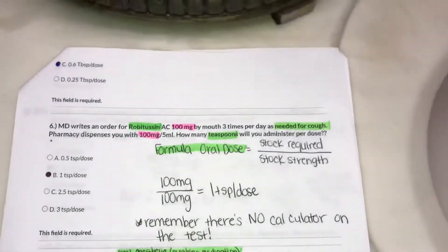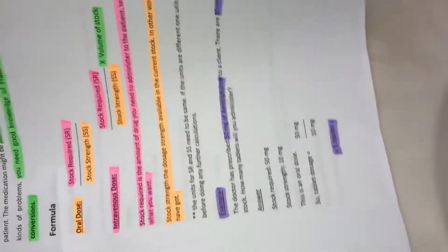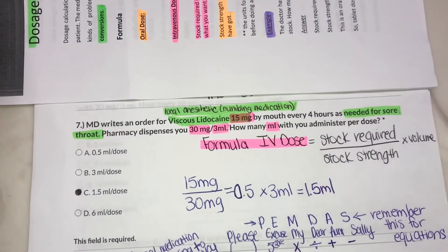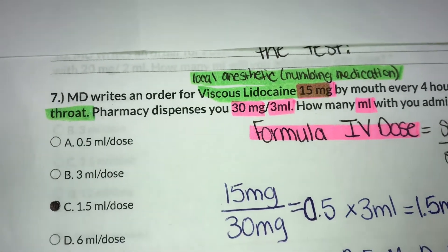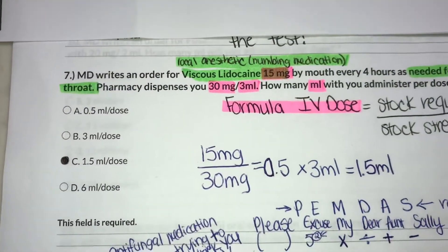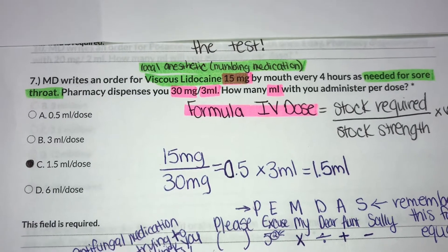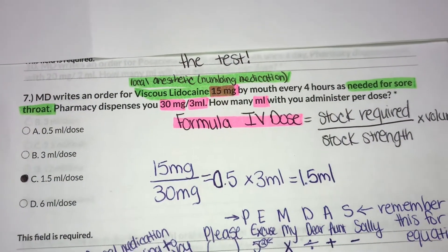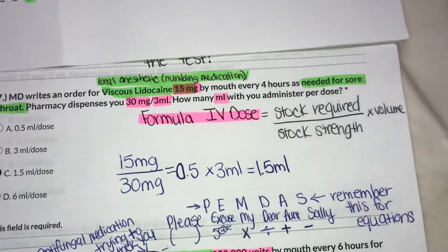For the next problem, the MD writes an order for Lidocaine. This medication is a local anesthetic used for numbing — in this case it's needed for a sore throat. It says the pharmacist dispenses 30 mg per 3 ml, and asks how many ml you will administer. Since it's asking for ml, you'll know to use the IV dose formula.